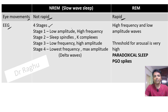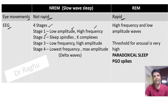In stage 1 we encounter low amplitude and high frequency waves. When we enter into stage 2 of sleep we see two characteristic features in NREM sleep: these are called sleep spindles and K complexes.